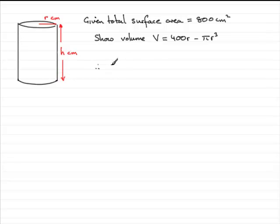So therefore, V equals the area of the circle, pi r squared, multiplied by the height, pi r squared h.